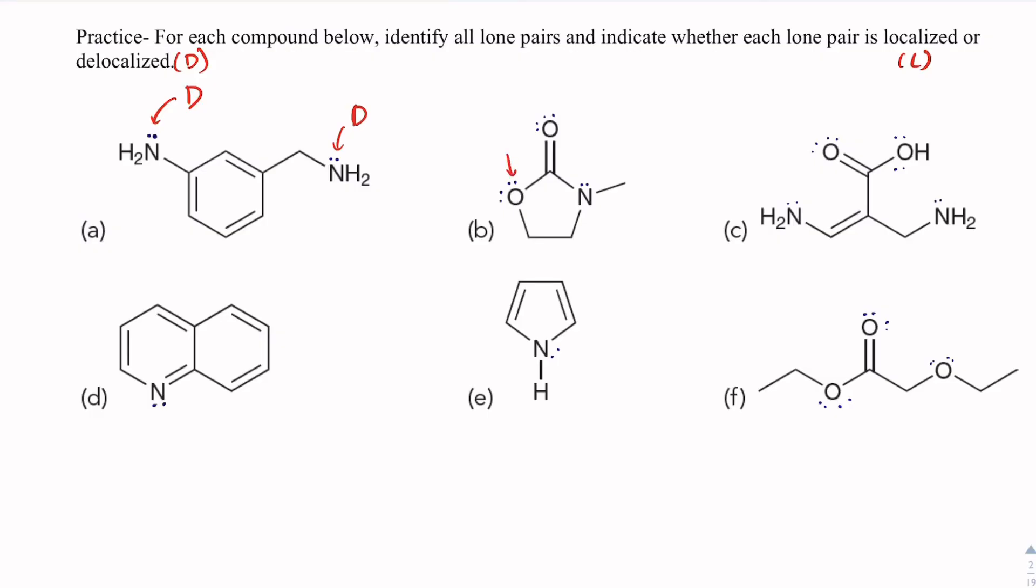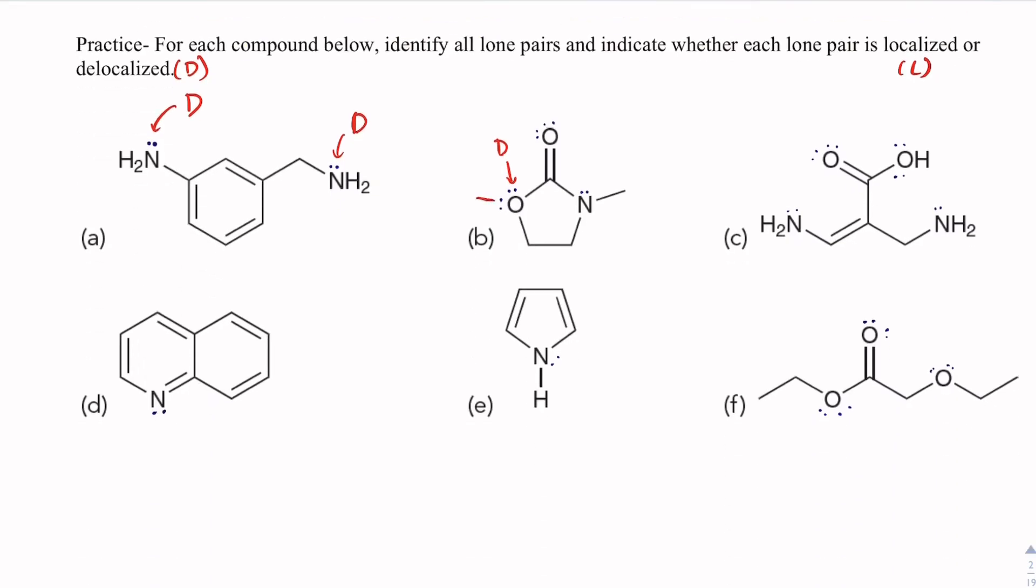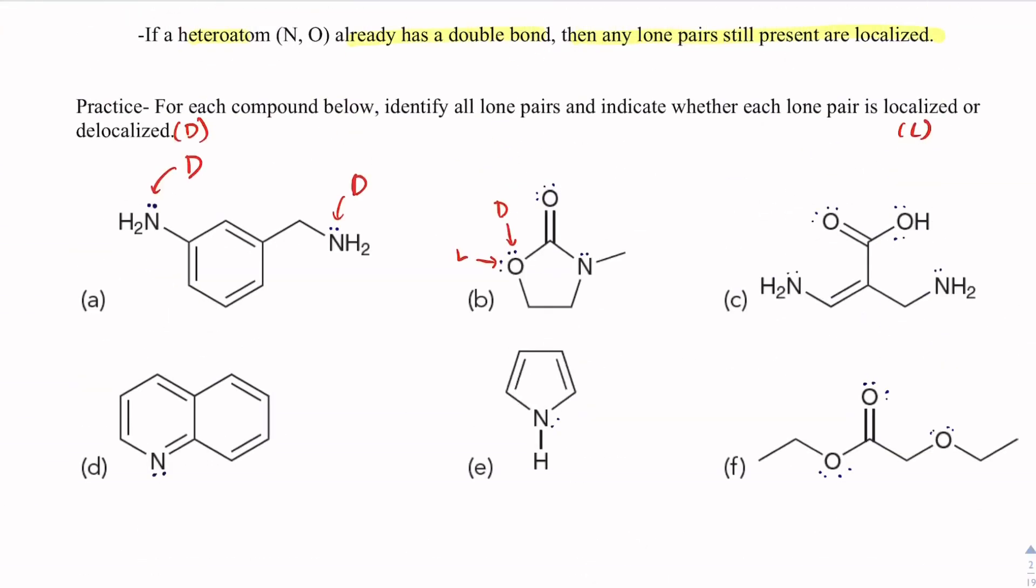Same thing here. No double bonds, so we have delocalized. But like we highlighted above, we can only have one pair be delocalized. So that means when we have a second pair, they will be localized. With this oxygen, this guy already has a double bond. So because he already has a double bond, we have to be localized. So anytime I see a double bond on an atom, these guys have to be localized.